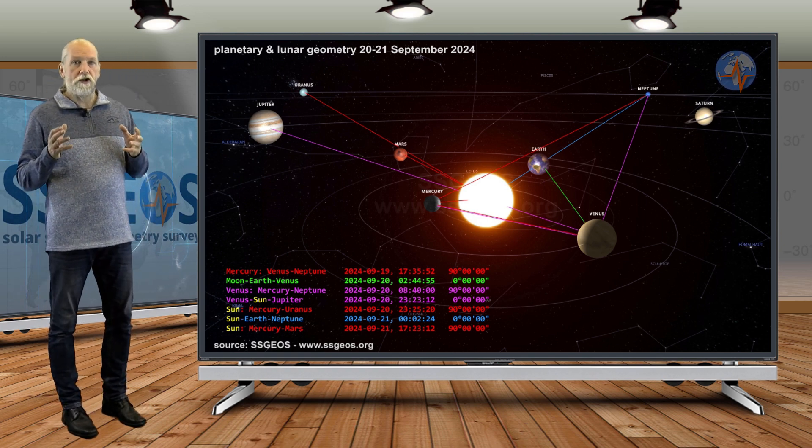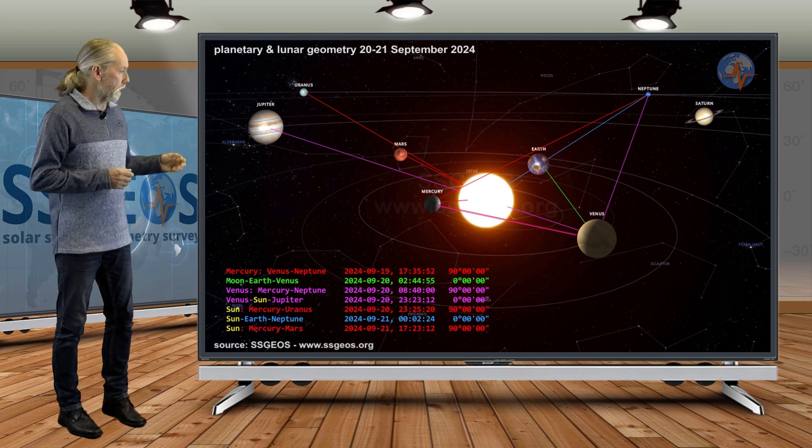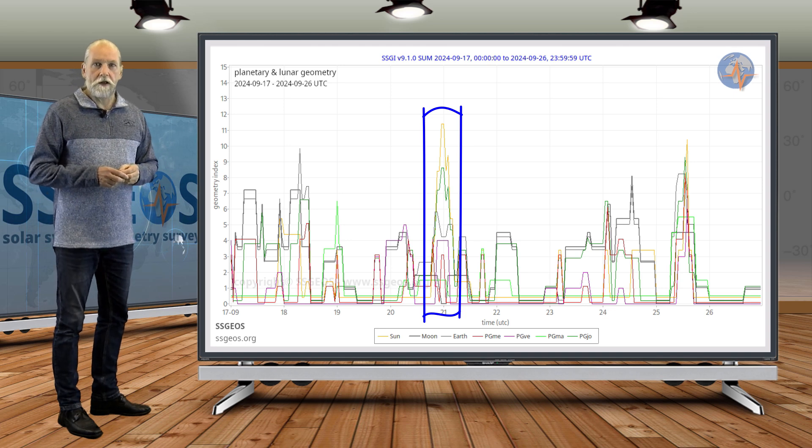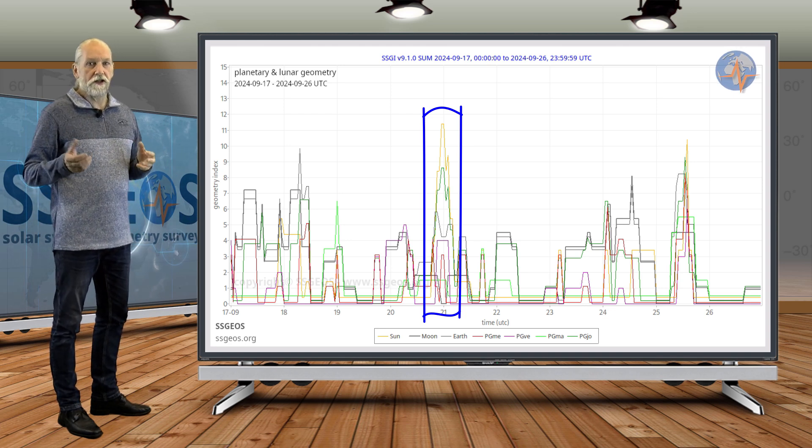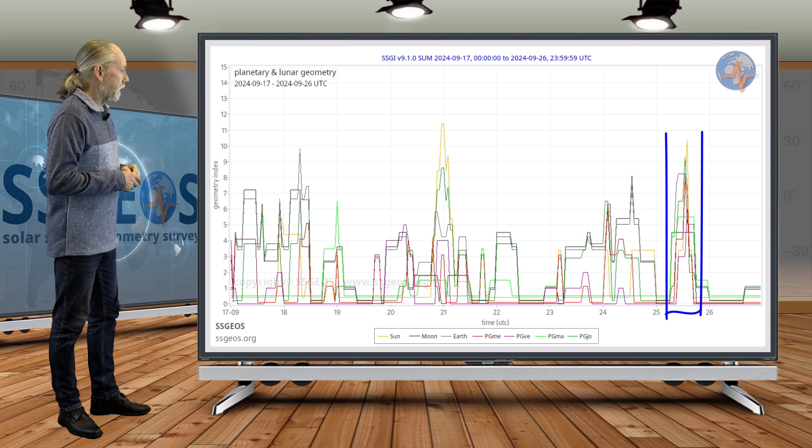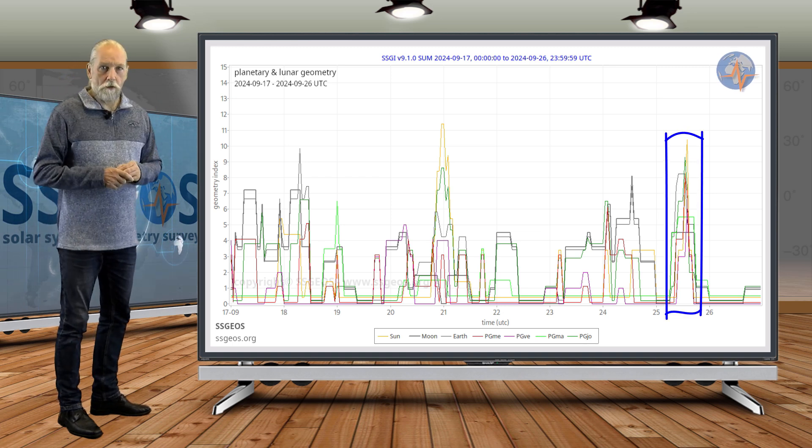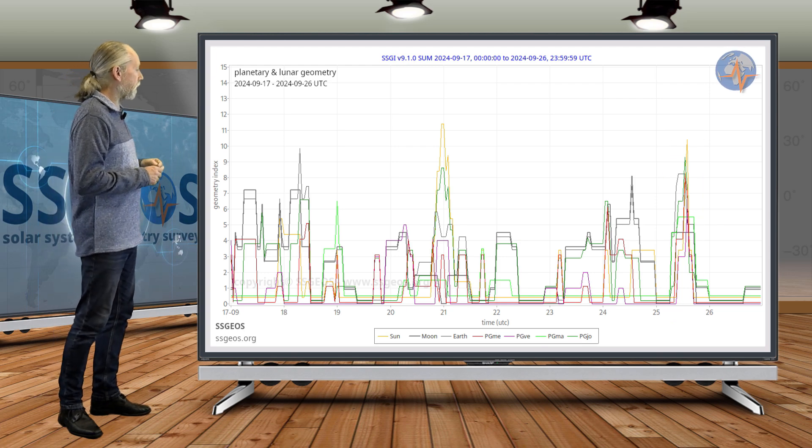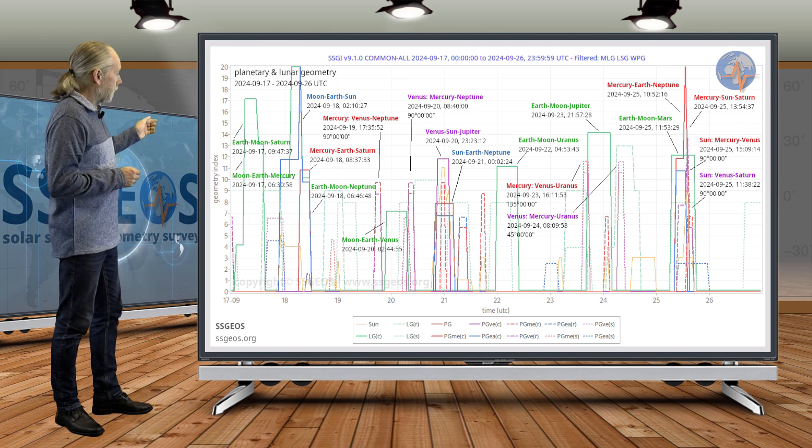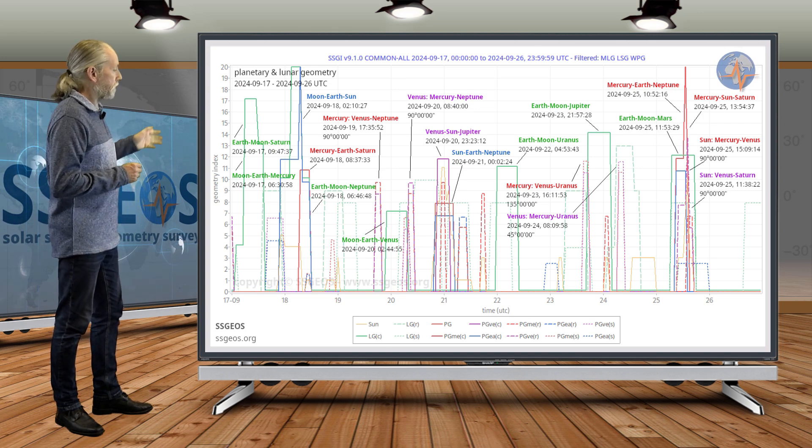And if we look at the SSGI sum graph, I don't show that so often actually. We see the high yellow peak and that is an indication that the Sun is very much involved here. And that also is going to happen later on, on the 25th. I will come to that later. Back to the SSGI graph, this is the common graph. We see this convergence, 20th, 21st.